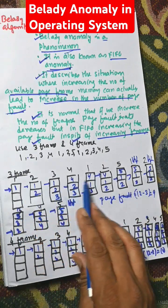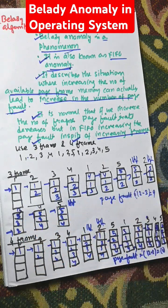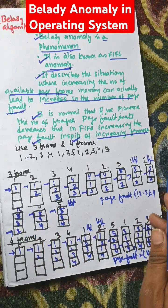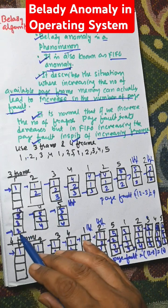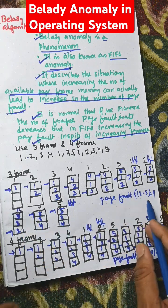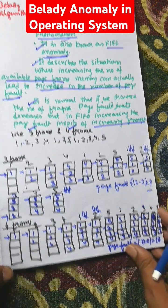The total number of page faults with 3 frames is 9.